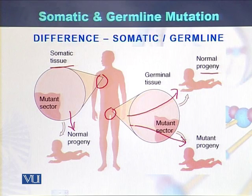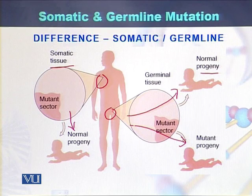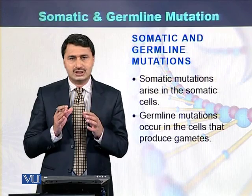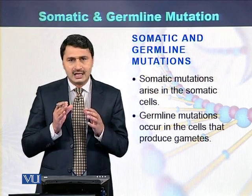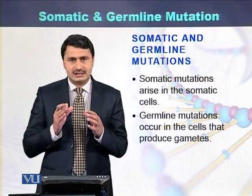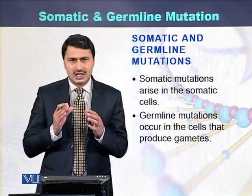So a somatic mutation is a mutation in the organs or body cells of the person. While a germline mutation occurs in the sex cells of the individual, and there is a possibility it transfers to the next generation. If the allele is normal, then that mutation will not transfer. In summary, somatic mutations occur in body cells and do not transfer to the next generation, while germline mutations occur in sex cells that produce gametes and do transfer to the next generations.